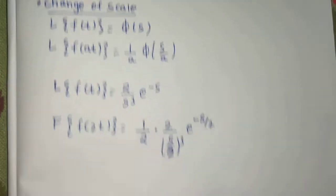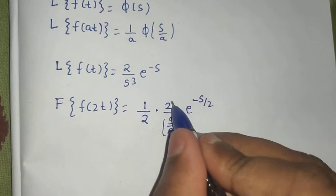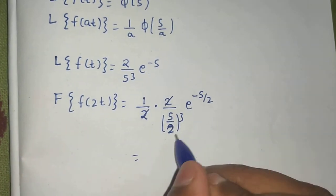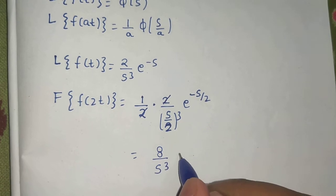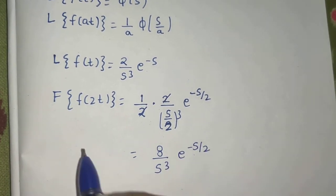So this will be 2 to cancel, 2 will go up as 8 s cube e power minus s by 2.